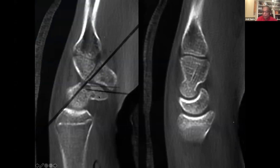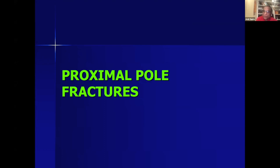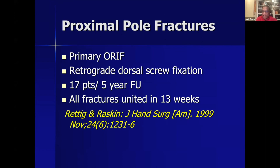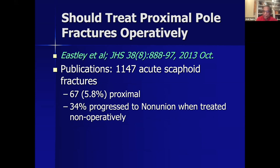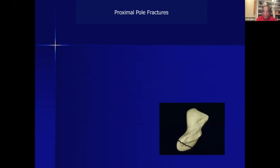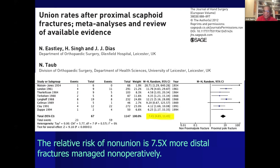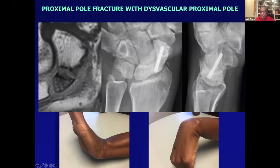Primary fixation of proximal pole fractures is very important and has been shown repeatedly in the literature. Joe Dias and Eastley's paper showed 7.5% risk of non-union with fractures managed non-operatively. Even a vascularly compromised proximal pole — and I would say disvascular rather than avascular necrosis — can revascularize once stably fixed and reduced, resulting in very good outcomes.